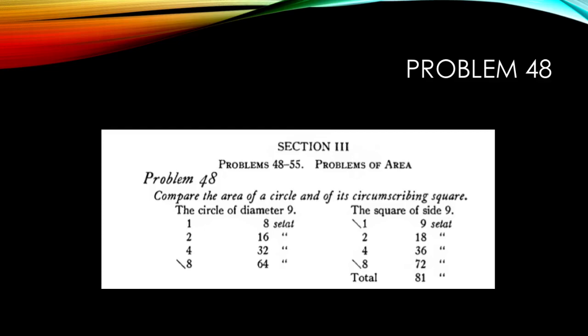The square of a side 9 is 1 times 9 gives you 9 setat, times 2 gives you 18, times 2 gives you 36, times 2 gives you 72. 9 is equal to 1 plus 8. Then we add the result of the multiplication of the two lines.